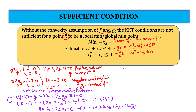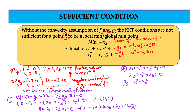The second KKT condition is complementary slackness: lambda i times Gi(X) equals 0. That is, lambda1 times (X1 squared plus X2 squared minus 4) equals 0, and lambda2 times (X1 squared plus X2) equals 0. The third is the feasibility condition: X1 squared plus X2 squared minus 4 less than or equals 0, and minus X1 squared plus X2 less than or equals 0. Fourth is the non-negativity condition: both multipliers lambda1 and lambda2 are greater than or equal to 0.